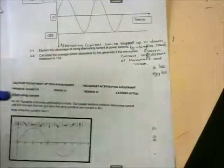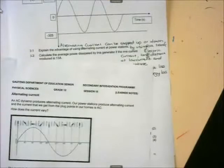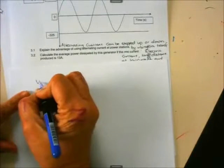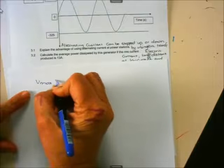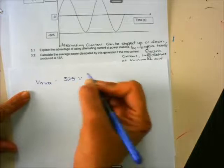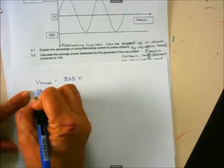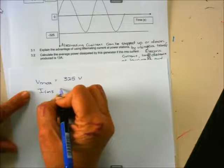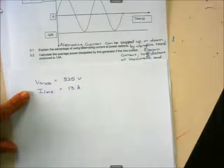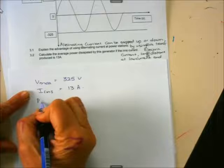In this case, what did they give us? They gave us Vmax. Let's quickly write it down. They gave us Vmax. Vmax is equal to 325 volts. Then they also told us that IRMS was equal to 13 amperes. And they wanted to know the power.